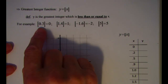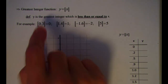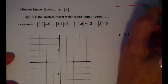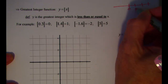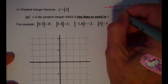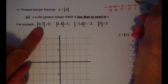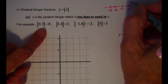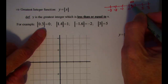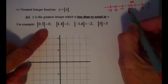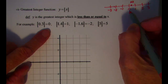For example, the greatest integer of 0.3 is 0. If we look at the number line, 0.3 is about here. What we want to do is find the integer that's to the left of that point. So that's how we arrived at 0 as the greatest integer of 0.3.